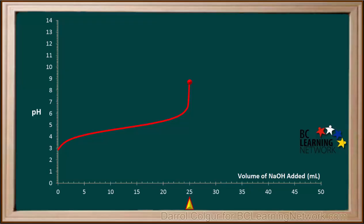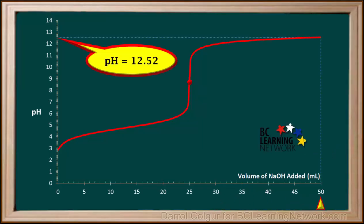As we add 3 more mL of NaOH to bring us to a total volume of 28 mL, the pH goes up quickly, then starts to decrease in its slope. As we add NaOH to a total of 50 mL, the pH rises very gradually. Once we've added a total of 50 mL of NaOH, the final pH is 12.52.